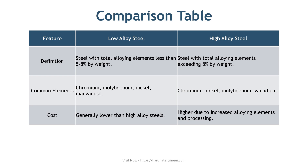In conclusion, the main distinction is the amount of alloying elements. Low alloy steel has less than five to eight percent alloy content. High alloy steel has more than eight percent alloy content. This classification impacts their mechanical properties, corrosion resistance, and suitability for various applications.